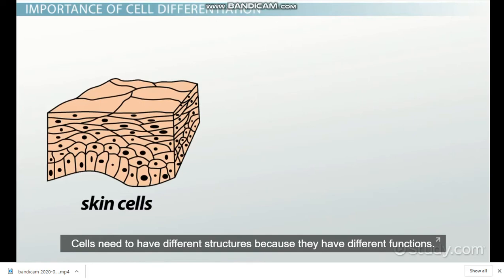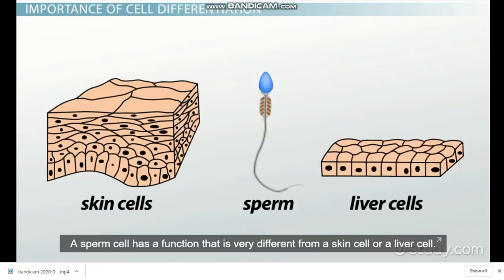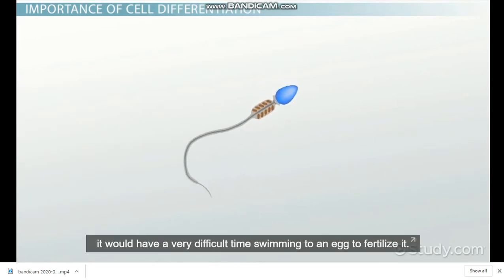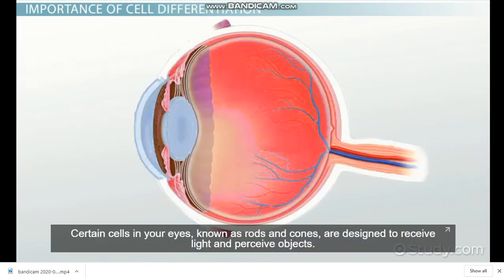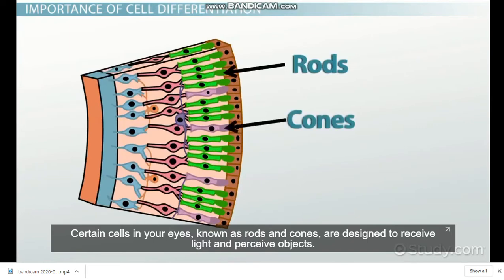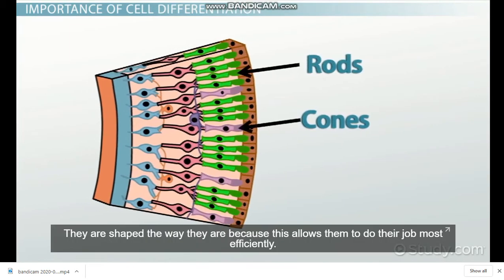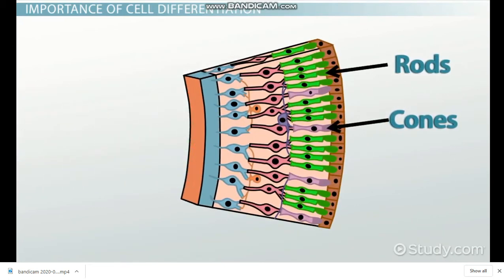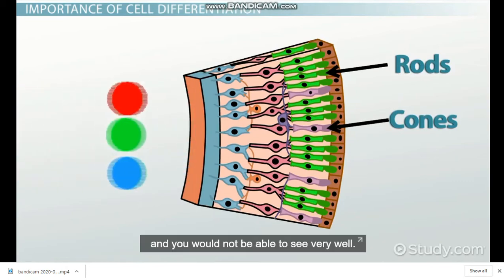Cells need to have different structures because they have different functions. A sperm cell has a function that is very different from a skin cell or a liver cell — if a sperm cell were not shaped the way it is, it would have a very difficult time swimming to an egg to fertilize it. Certain cells in your eyes, known as rods and cones, are designed to receive light and perceive objects. They are shaped the way they are because this allows them to do their job most efficiently; if shaped any other way, they would not be able to function properly and you would not be able to see very well.